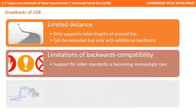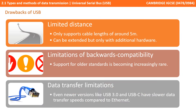There are some drawbacks of the Universal Serial Bus, and the main one is the limited distance. It can really only support a cable length of around 5 metres. USB hubs are needed to extend this further.